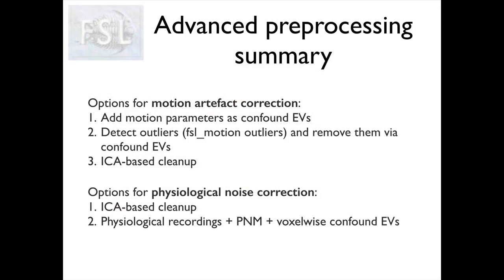To conclude, we have seen three options for motion artifact correction: namely adding motion parameters as confound EVs, detecting motion outliers and including them as additional EVs, and using ICA-based cleaning. For physiological noise correction, we have seen a data-driven approach with ICA-based cleaning, and one which requires physiological recordings - physiological noise modeling and the use of voxel-wise confound EVs. Thank you.